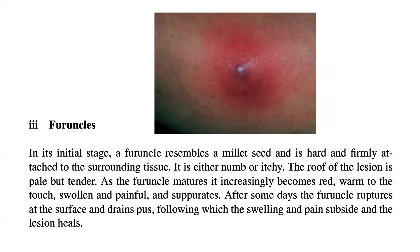In its initial stage, a furuncle resembles a millet seed and is hard and firmly attached to the surrounding tissue. It is either numb or itchy. The roof of the lesion is pale but tender. As the furuncle matures, it increasingly becomes red, warm to the touch, swollen and painful, and separates. After some days, the furuncle ruptures at the surface and drains pus, following which the swelling and pain subside and the lesion heals.